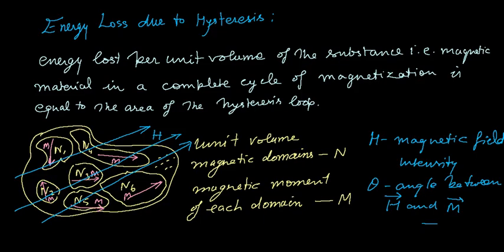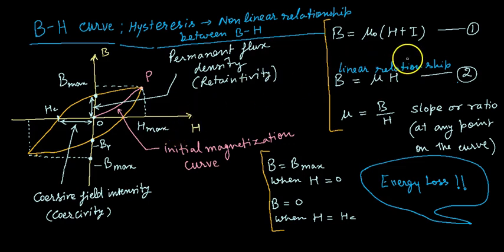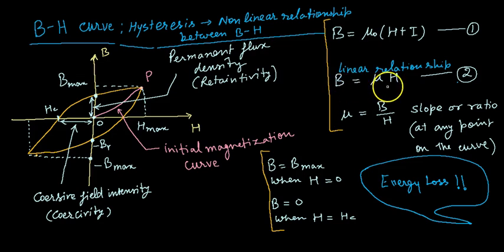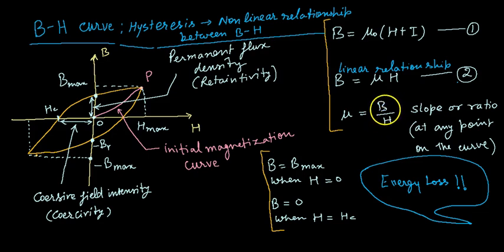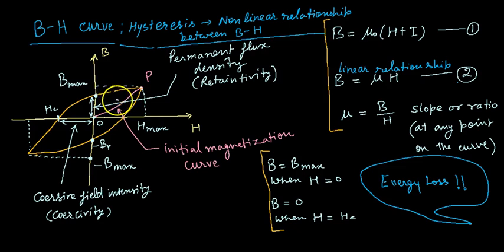In the second formula, B = μH, we are discussing magnetic flux density and magnetic field intensity within the material. There is a linear relationship between B and H, and at any point on the BH curve one has to take the ratio B/H to calculate the permeability μ.